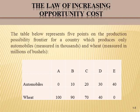The table below represents five points on the production possibility frontier for a country which produces only automobiles, measured in thousands, and wheat, measured in millions of bushels. As we see in the table, we have five points A, B, C, D, E. The automobiles move from 0 to 10 to 20 to 30 to 40, and the wheat goes 100, 90, 70, 40, and zero.